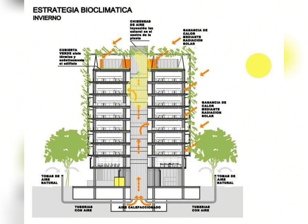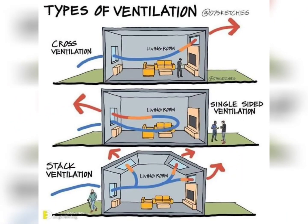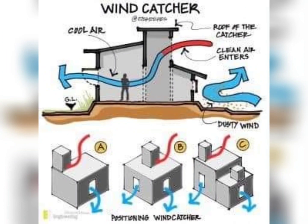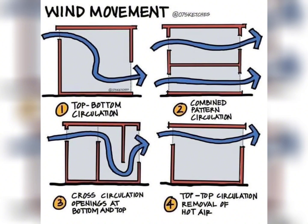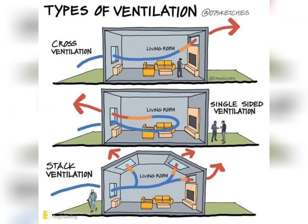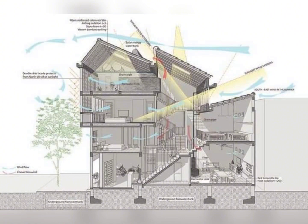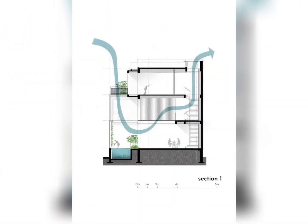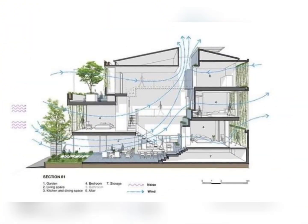Building ventilation systems fall into two main categories: natural ventilation, utilizing natural forces like wind and temperature differences, and mechanical ventilation, using fans and ducts for controlled airflow. Natural ventilation strategies include cross, stack, and wind-driven ventilation. Mechanical ventilation systems include supply, exhaust, and balanced ventilation. The choice depends on factors like location, climate, occupancy, and indoor air quality requirements.